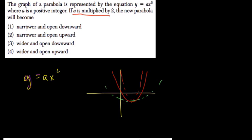So it should be narrower and open... so positive, if a is positive, it opens upwards. If a is negative, it would open downward.